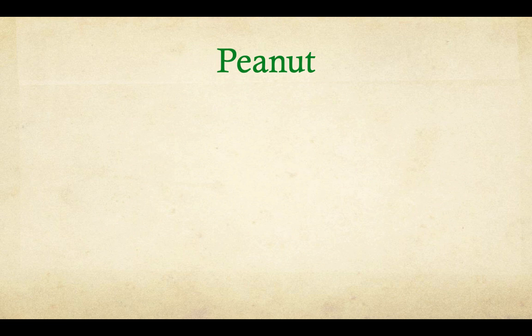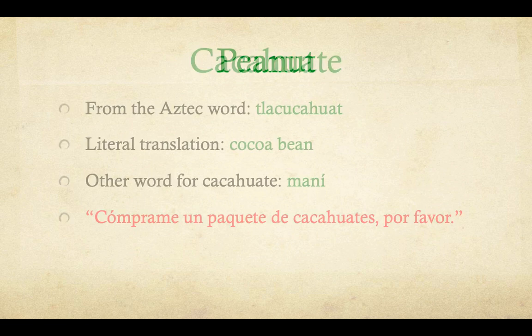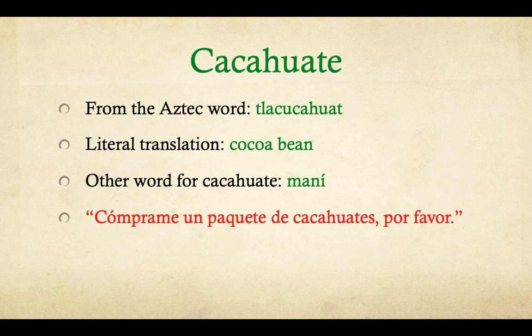Peanut. Do you know what they say in Mexico for peanut? 'Cacahuate,' or 'cacahuete.' It comes from the Aztec word 'tlacacahuate' and it translates to 'cocoa bean.' Another word in Latin America for cacahuate is 'maní.' Example sentence: 'Cómprame un paquete de cacahuate por favor' — Buy me a pack of peanuts, please.